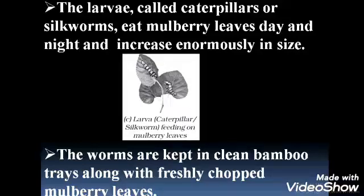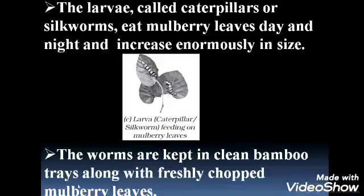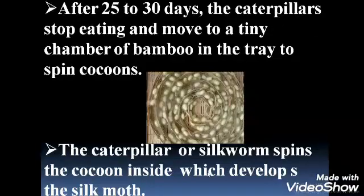The worms are kept in clean bamboo trays along with freshly chopped mulberry leaves. These silkworms are kept in clean bamboo trays, and mulberry leaves are introduced for feeding.